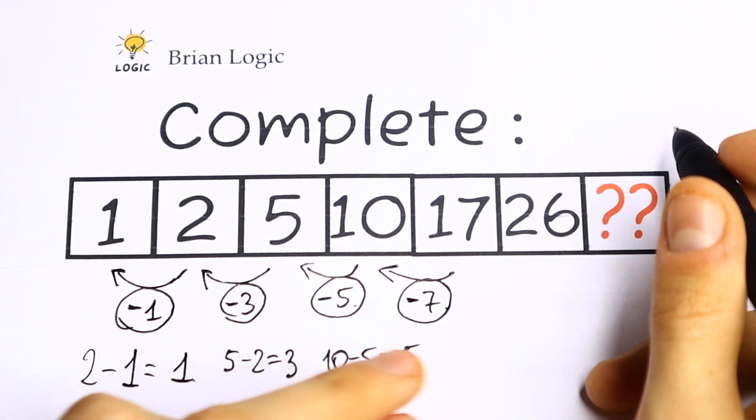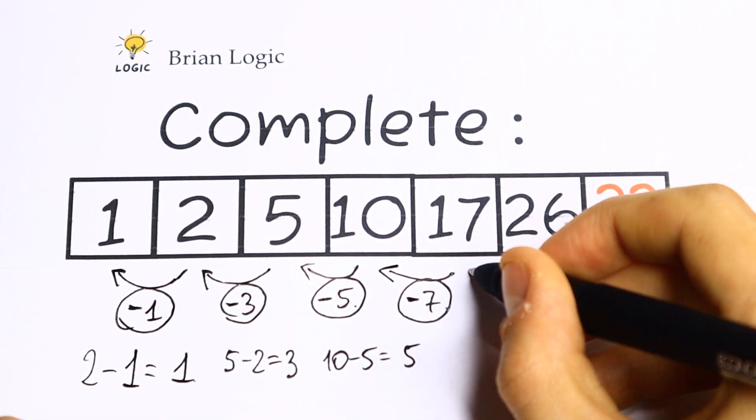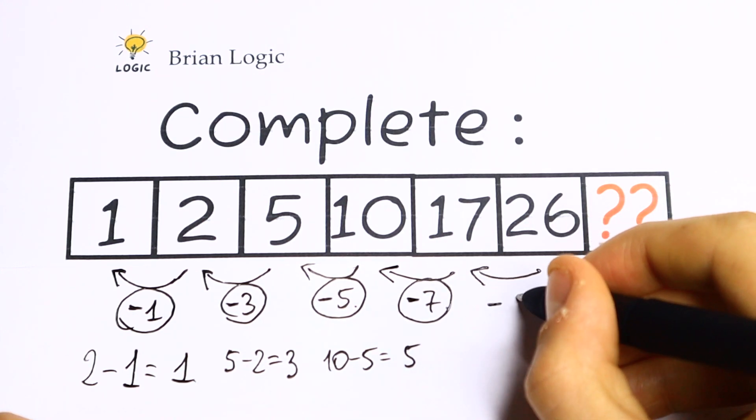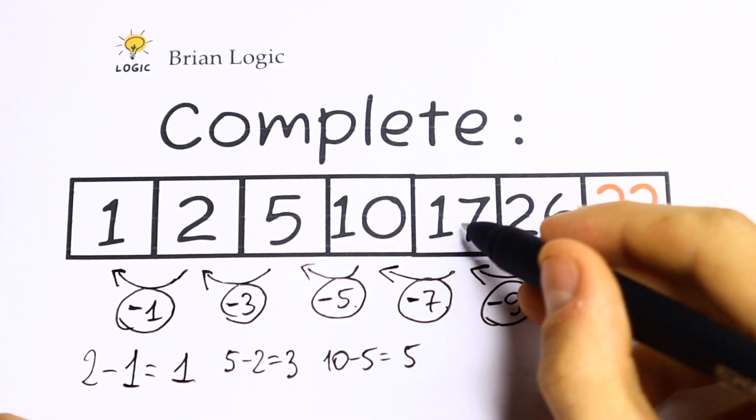And let's use the same logic. Maybe this logic is correct. So if we subtract from this 26, if we subtract 9, we will have 17.